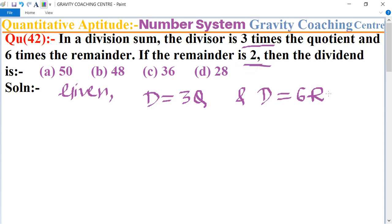Remainder is given as 2, so 6 multiplied by 2 equals 12. So we put here divisor equals 12 equals 3Q. Cancel by 3, so the quotient is 4. Therefore dividend equals, we know that the formula of dividend is